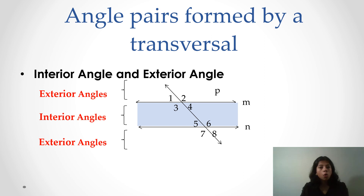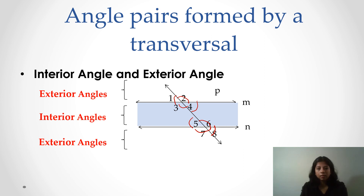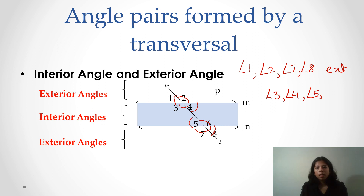Now let's see the angle pairs formed by a transversal. Interior and exterior angles are formed by a transversal on two parallel lines. There are eight angles total formed. Angles 1, 2, 7, and 8 are called exterior angles, and the angles formed inside the parallel lines — angles 3, 4, 5, and 6 — are called interior angles.